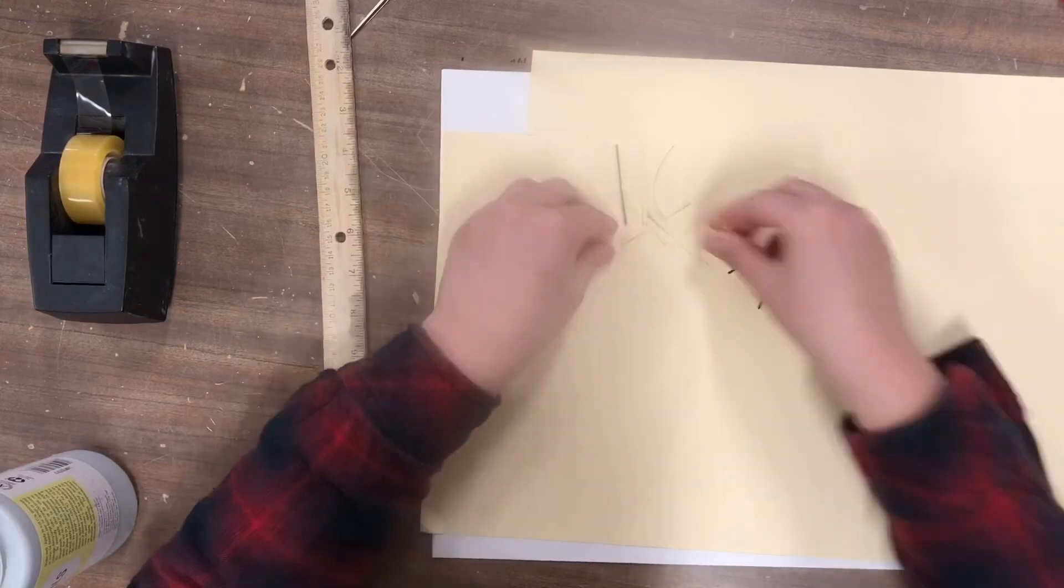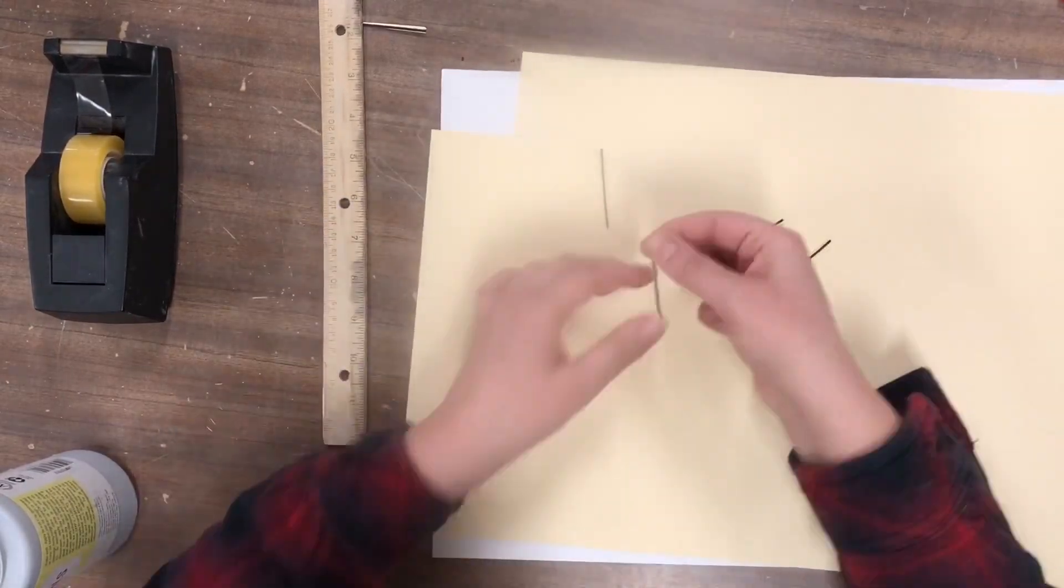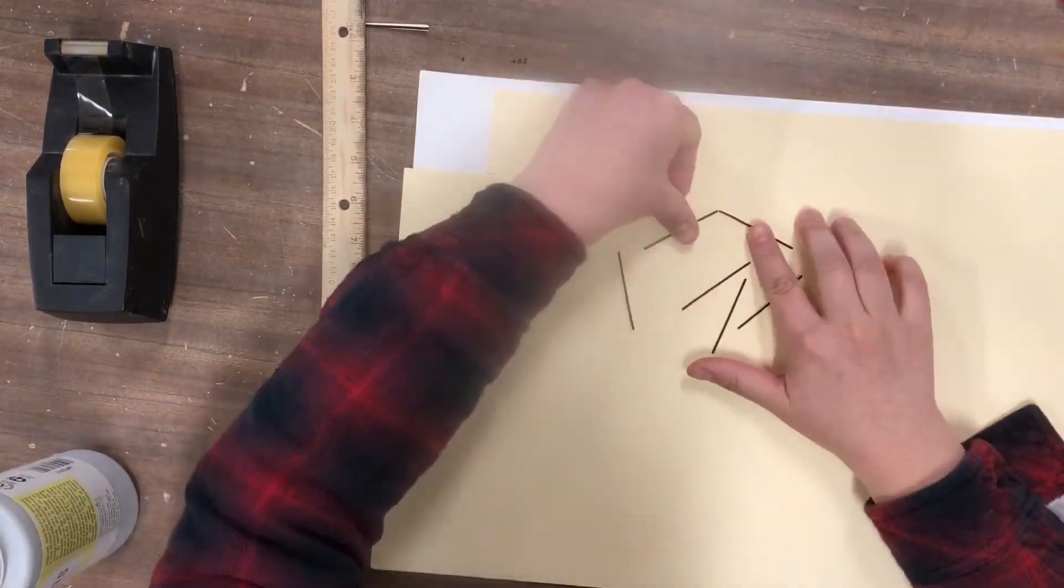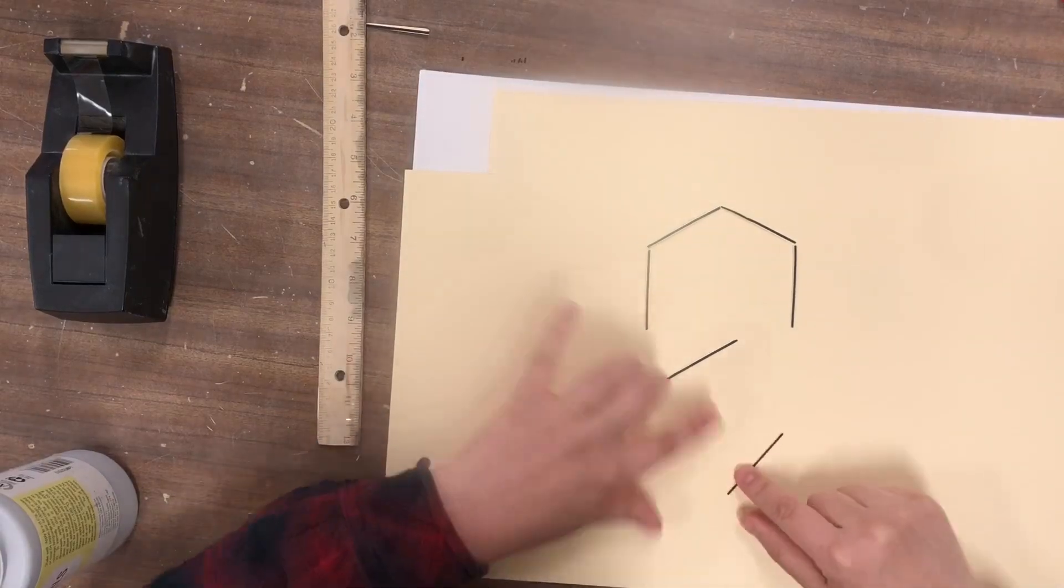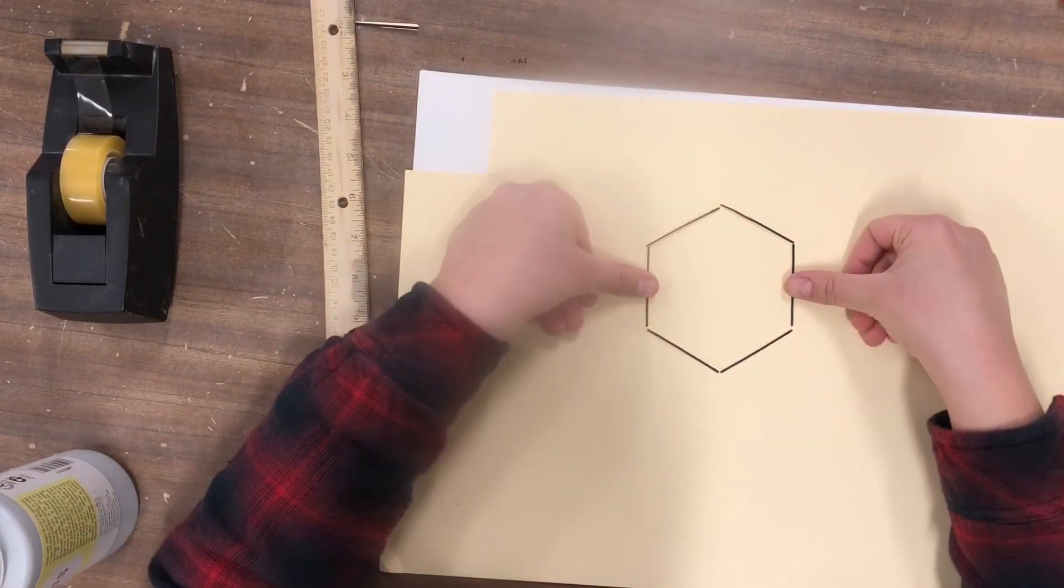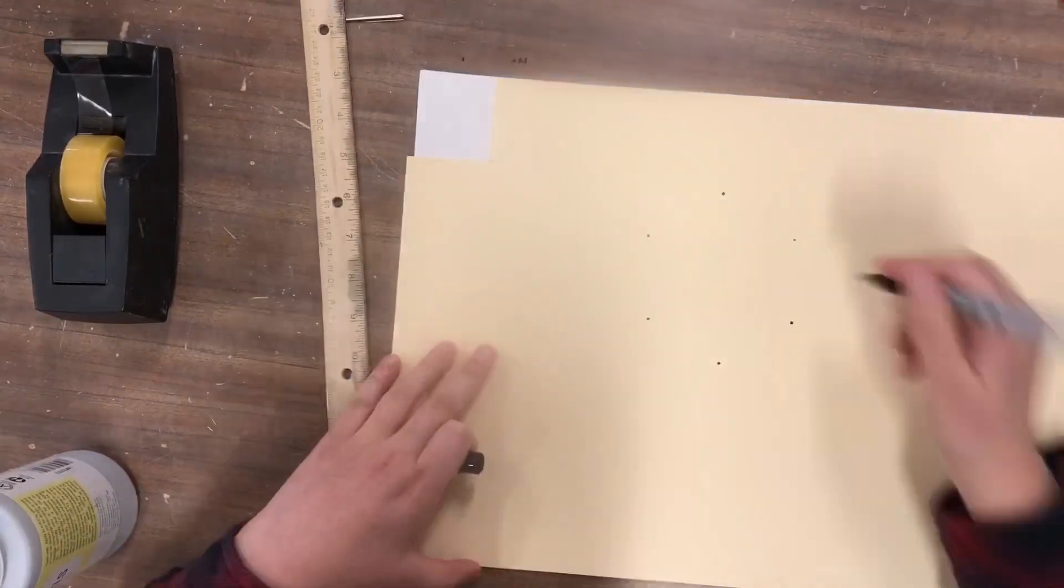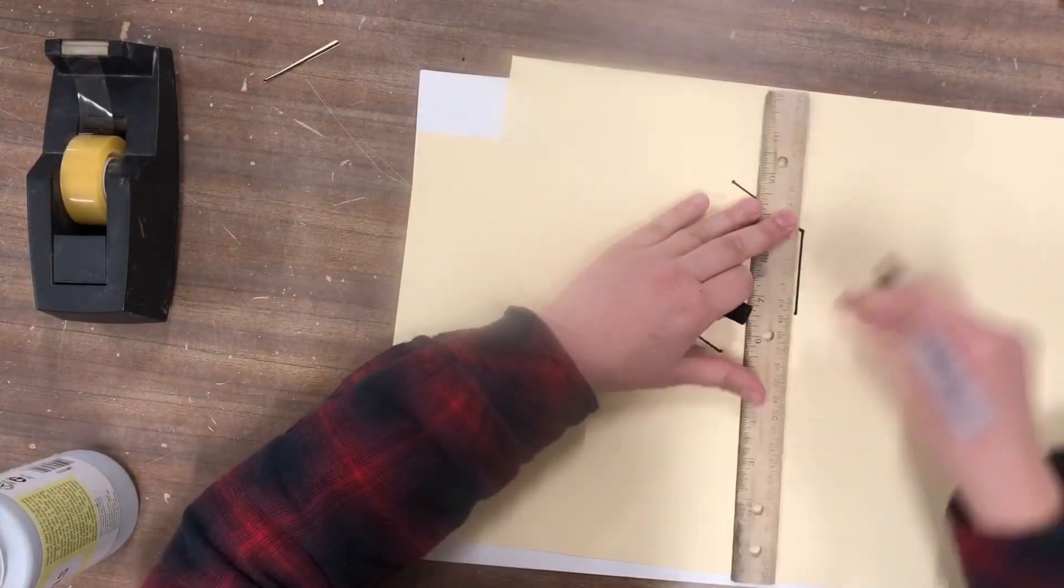Draw six lines in the length you want each of the walls of your hexagon to be. Then arrange them into a hexagonal shape by connecting each of the ends of the lines together. Mark a dot where two of the lines meet and connect those dots.